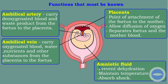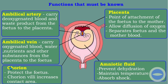The amniotic fluid is the fluid inside the amniotic cavity. It prevents dehydration, maintains temperature, and absorbs shock. The chorion is the membrane next to the amniotic membrane; its function is to protect the fetus. The chorionic villi increase the contact surface area at the placenta so that more diffusion can take place. These are the functions that, according to the examination guideline, we must know.